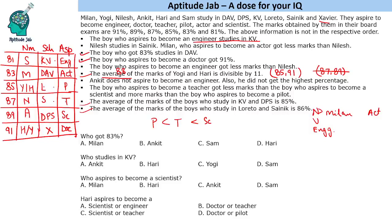Now we can answer the questions. The student with 83% is Millen, and Sam studies in KV. Ankit aspires to become a scientist. As for Hari, he is either 85 or 91, making his aspiration either pilot or doctor — and that is the solution to the set and the answers to the questions.